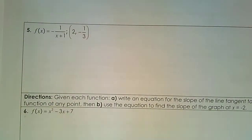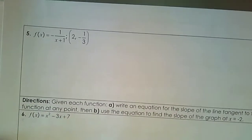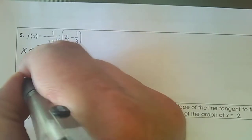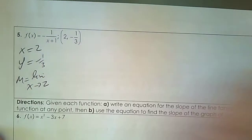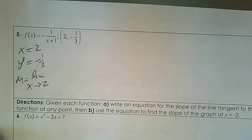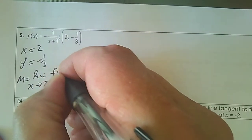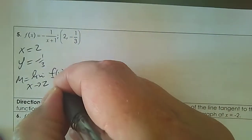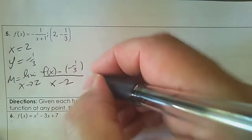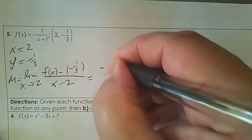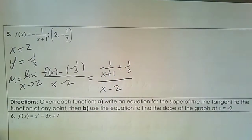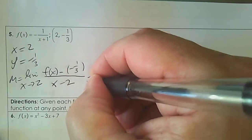Number 5. Same thing — keep practicing. Step 1: x equals 2, y equals negative 1 third. The slope is the limit as x approaches 2: [f(x) subtract f(2)] over [x subtract 2]. We know f(2) is negative 1 third. So we have negative 1 over (x plus 1) plus 1 third, all over x minus 2.